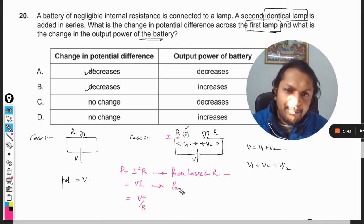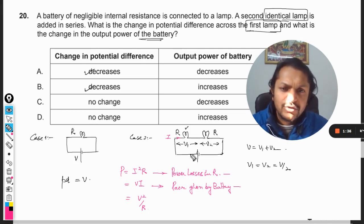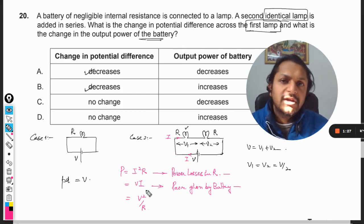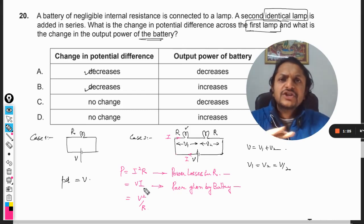P equals V into I is the formula when we particularly want to concentrate on the battery - power given by battery. We see what is the EMF of the cell and what is the current that is being drawn from the battery. So power becomes P equals V into I. That is the total power given by the battery which is totally consumed by all of the resistances in the circuit.